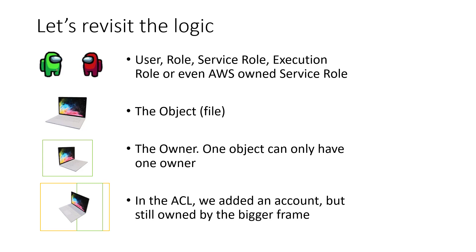Now let's switch that real example into system backend logic. Red, green, and yellow can be a user role, service role, execution role, or any AWS principal — sometimes even an AWS-owned service role. The laptop in the example is the object — it can be a file, a picture, anything. The rectangle above the laptop represents who is the owner of that object. Remember: one object can only have one owner — there is no co-ownership in S3. In the ACL, access control list, we can add additional accounts, similar to adding multiple user accounts on a Windows laptop. But there is still only one owner.